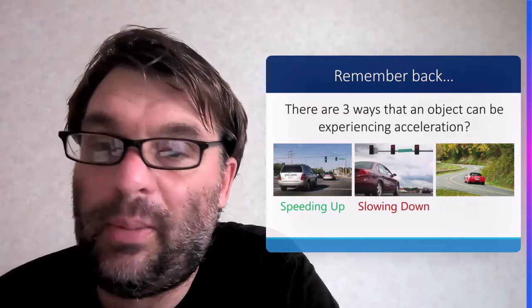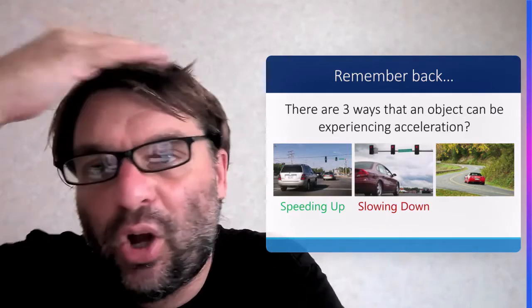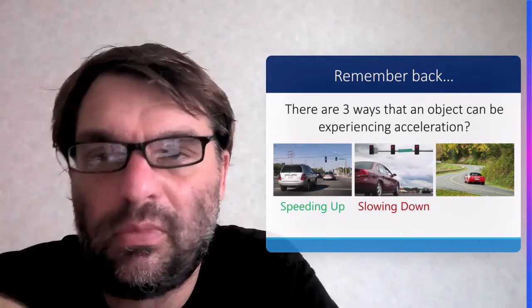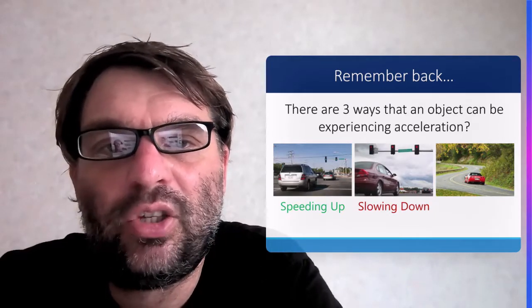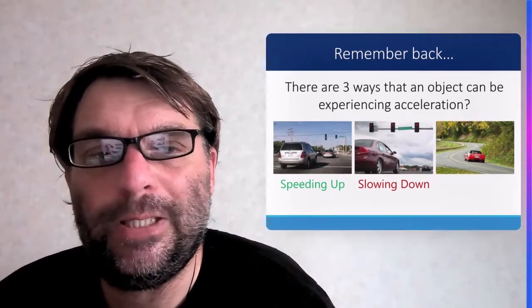In circular motion, essentially the tangential velocity is remaining constant, but because the direction of that tangential velocity changes as the circle moves, then it's changing its direction, so it's still accelerating. This is an important point.